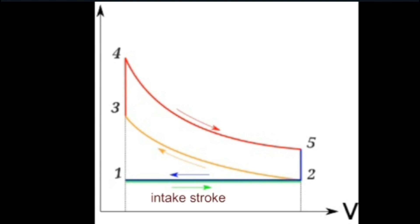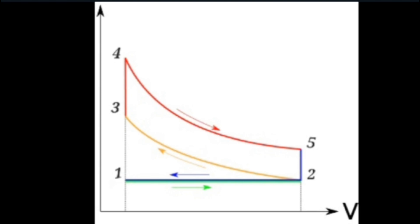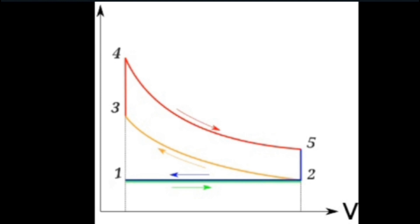This process is called the intake stroke. The piston moves down, creating a vacuum in the cylinder; the intake valve opens and the air-fuel mixture is drawn into the cylinder. In the second process, as shown in the graph from two to three, the volume decreases and pressure increases. This process is called the compression stroke. Both intake and exhaust valves are closed; the piston moves up, compressing the air-fuel mixture, which increases its pressure and temperature.